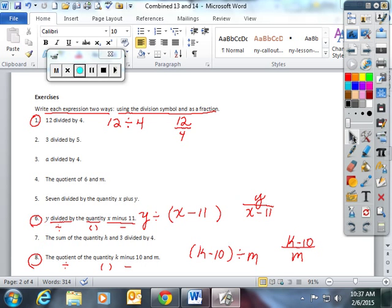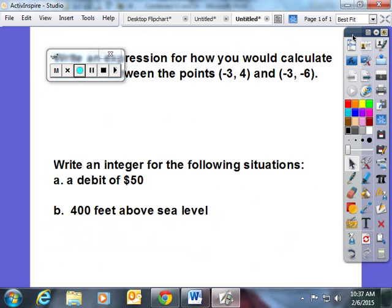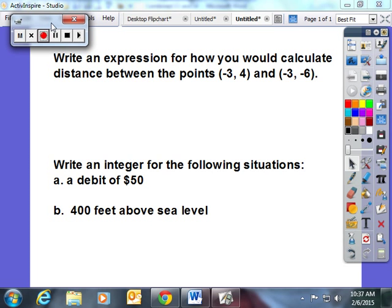In addition to this, I would like to review some of the lessons we learned previously. Write an expression for how you would calculate distance between the points negative 3, 4, and negative 3, negative 6. I hope by now that you're putting these points on top of each other. You are looking at which coordinate they have the same.